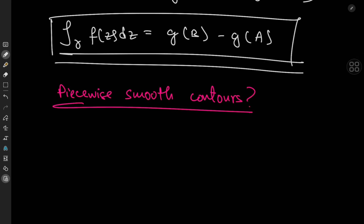But what if the contour is only piecewise smooth? Those cases are no problem. If you have a curve gamma that's piecewise smooth — meaning you can break it down into smooth curves gamma 1, gamma 2, gamma 3, up to gamma n — these curves connect points a₀, a₁, a₂, up to aₙ, where a₀ is the point a and aₙ is the point b.